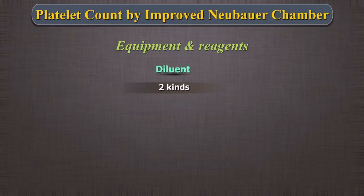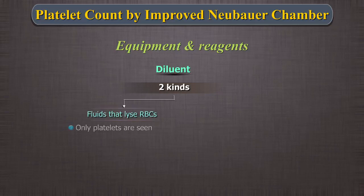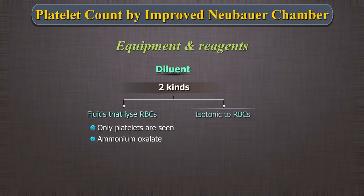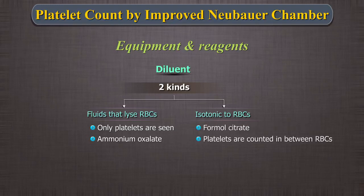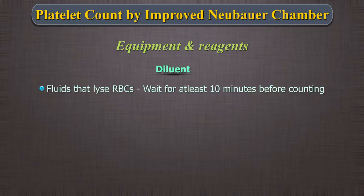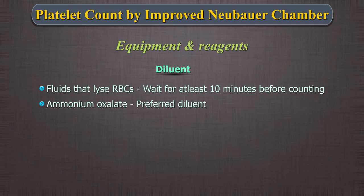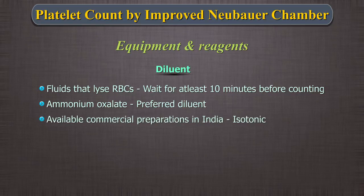There are two kinds of platelet fluids available. First, fluids that lyse RBCs so that only platelets are seen on the field — example: ammonium oxalate. Second, those that are isotonic to RBCs and will not lyse them — example: formal citrate. In this case, the platelets are to be counted in between RBCs. If you are using fluids that lyse RBCs, wait for at least 10 minutes so that the RBCs can be lysed before counts are done. Most standard textbooks recommend ammonium oxalate as the preferred diluent. However, the easily available commercial preparations in India are isotonic. Therefore, it is important to understand the counting processes in both.